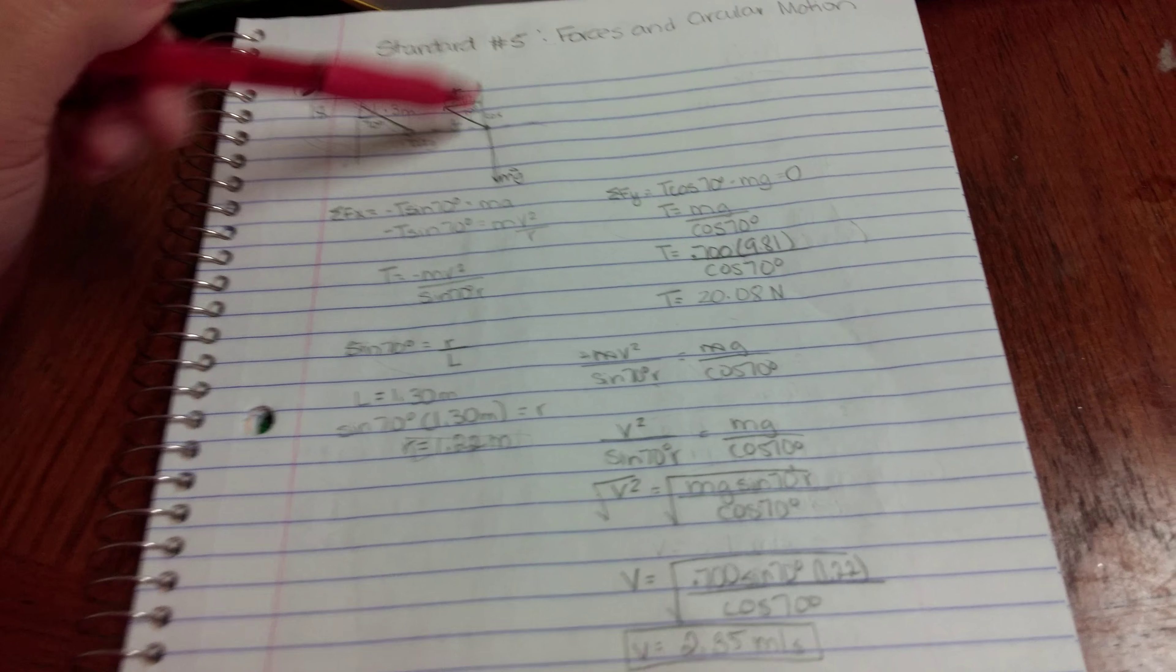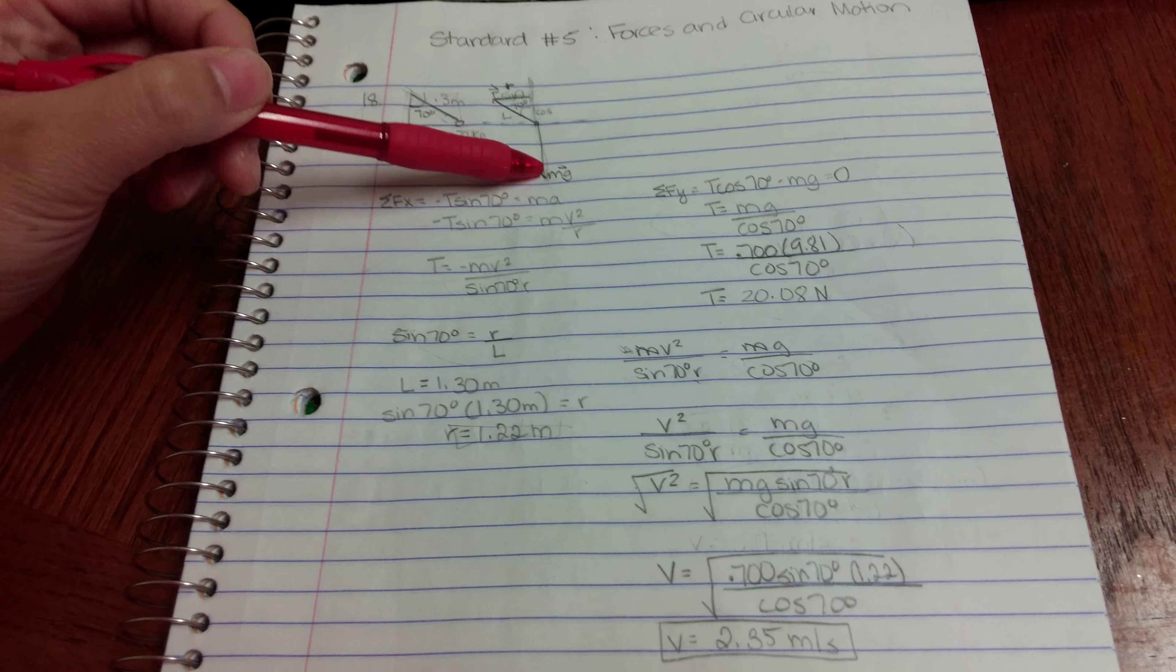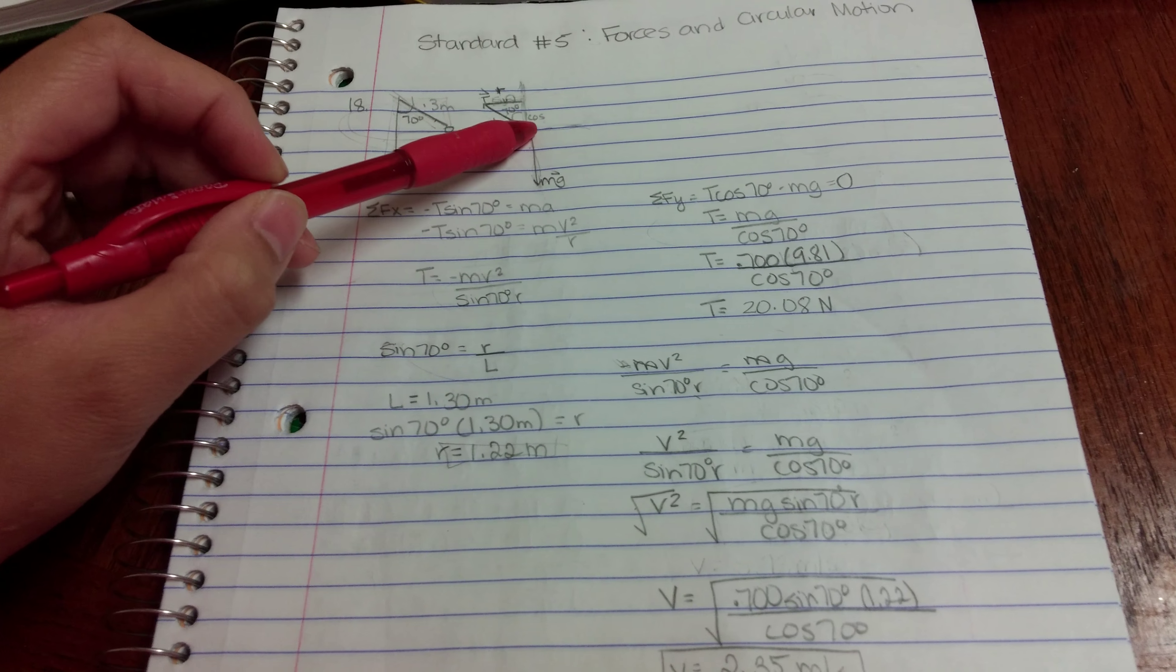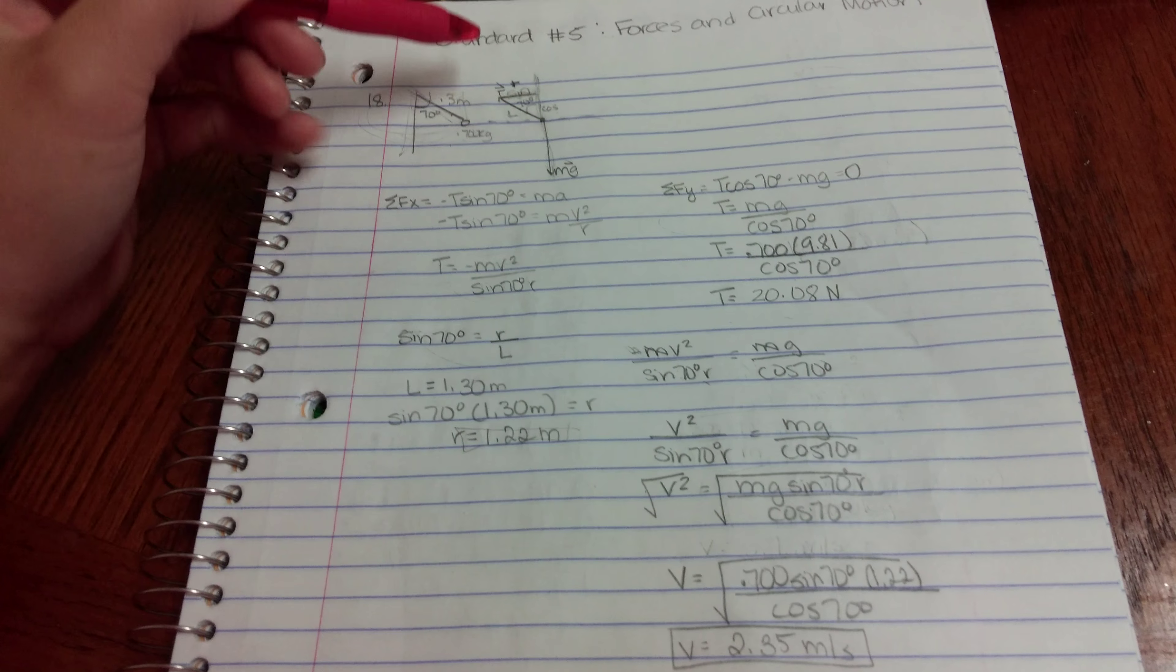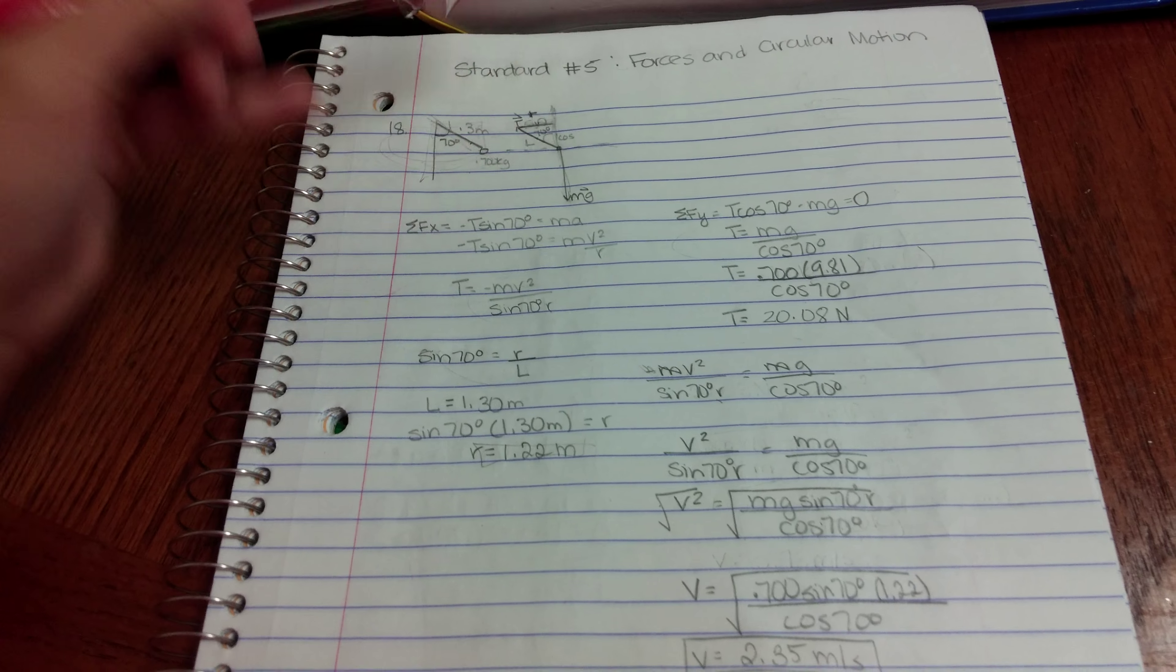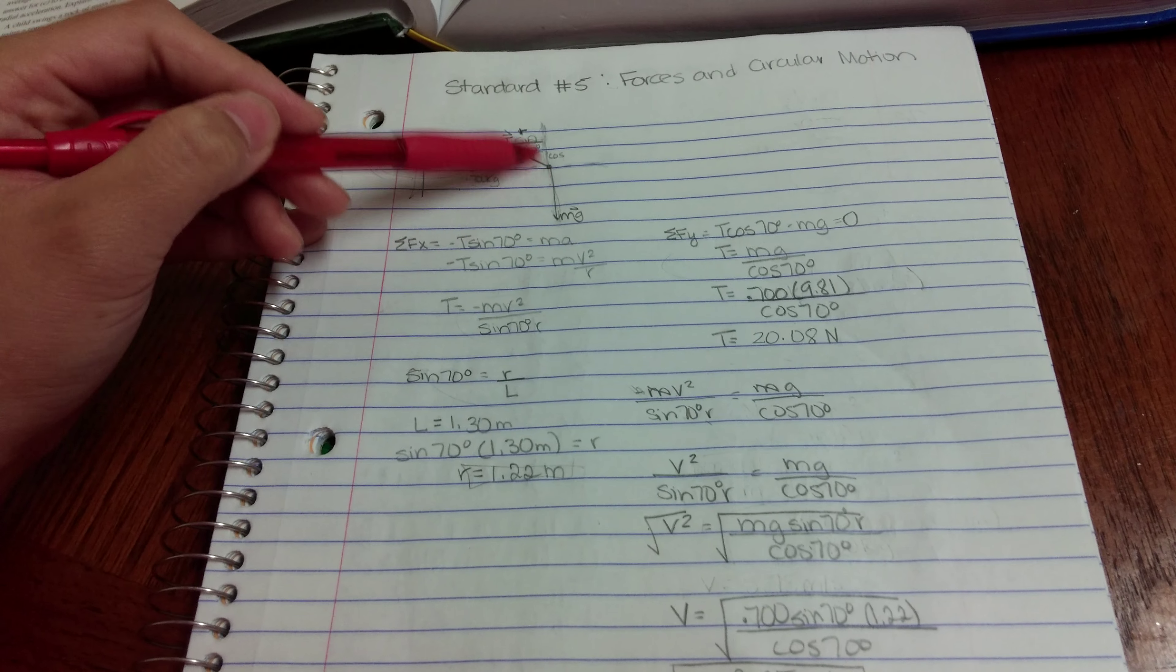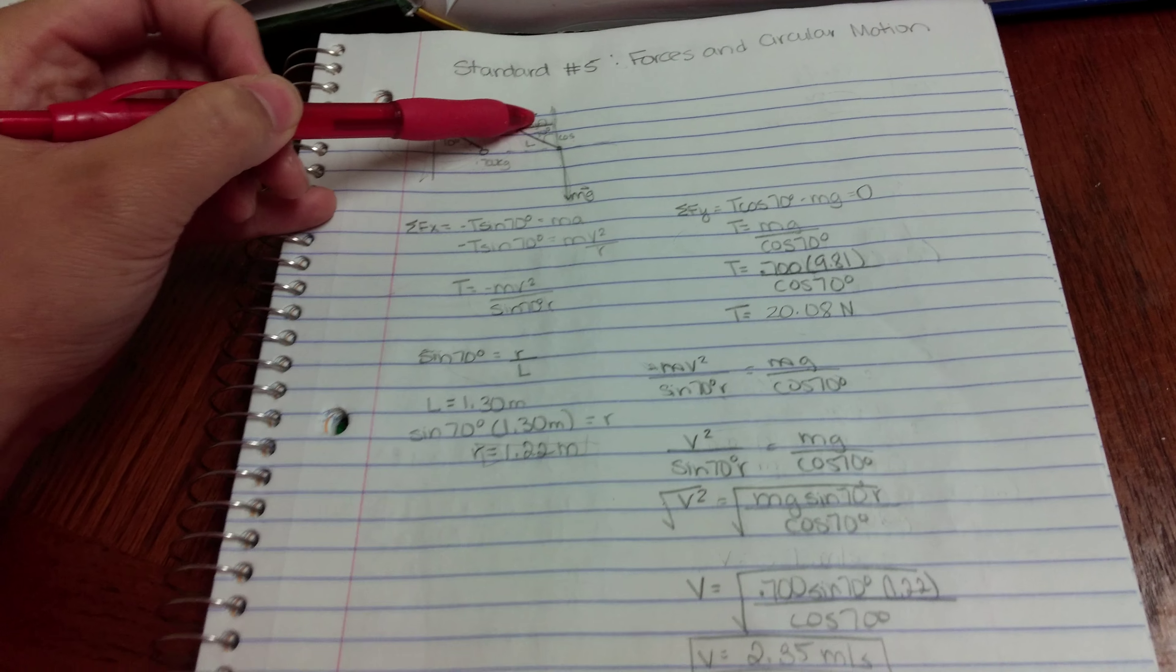So the first thing I did was I drew a free body diagram for the ball. I have gravitational force pulling down on the mass of the ball, that's my mg. And then I have the tension of the rope pulling up on the ball diagonally. And that is my tension. And then this is my angle of 70 degrees. Opposite of angle is sine, adjacent is cosine. This right here is my radius.